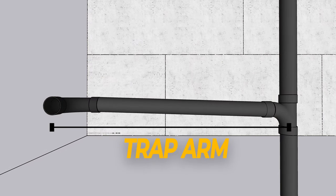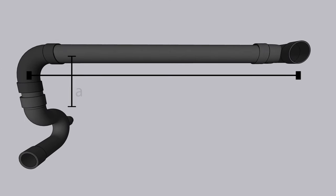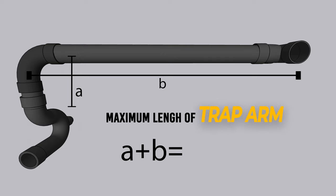A trap arm is the portion of a fixture drain between the trap weir and the vent pipe fitting. The maximum length of a trap arm pipe cannot exceed six feet for an inch and a half pipe. So in our case, length of this pipe cannot be more than six feet.